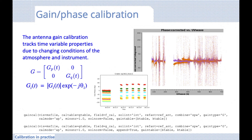On a practical level: while delay and bandpass use primary calibrators because they are slowly varying in time and more frequency-based, these gain calibrations are very definitely time-based to track local conditions. For these, we need more frequent observations and more frequent corrections. We also need the calibrator to be closer to the science target — since one contributor is the atmosphere, we need this calibrator close to the target to get a true reflection of the atmosphere towards our target when solving on our gain calibrator.